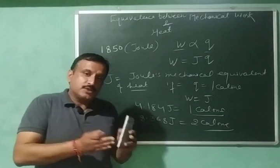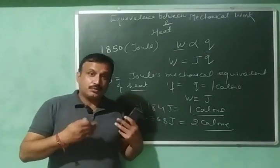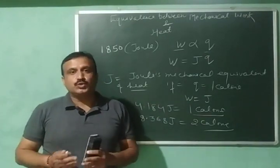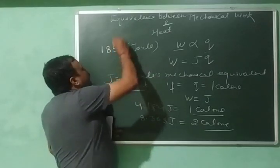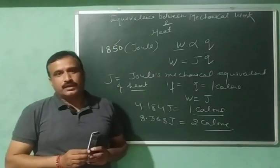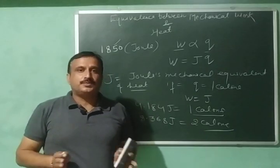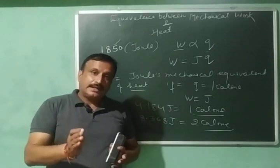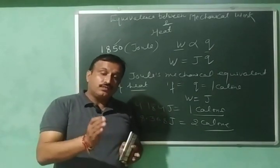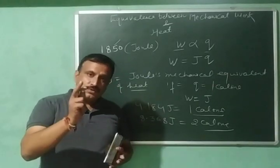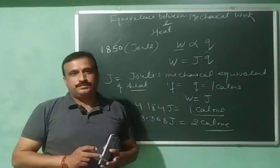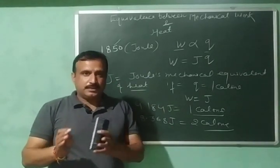Exact measurement of work done and heat produced was done by Joule in the year 1850. After performing a series of experiments, he found that for a definite amount of work done, same amount of heat will be produced. I will explain this statement later on.